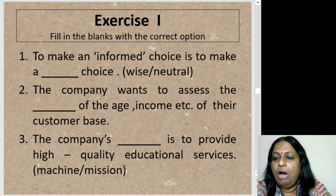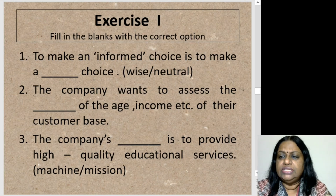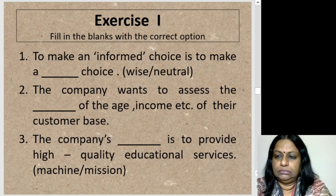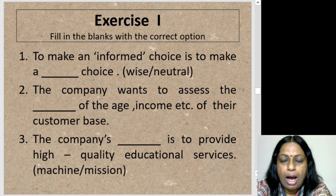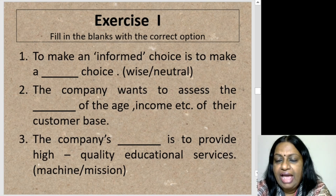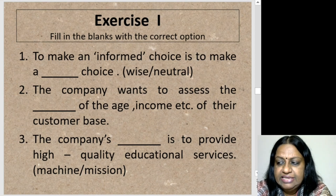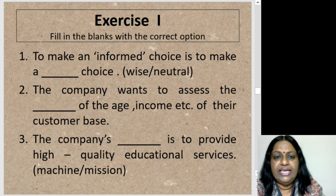To make an informed choice is to make a wise choice. The second sentence: 'The company wants to assess the blank of the age, income, etc. of their customer base.' The options are 'democracy' and 'demographics.' The correct answer is demographics — D-E-M-O-G-R-A-P-H-I-C-S.